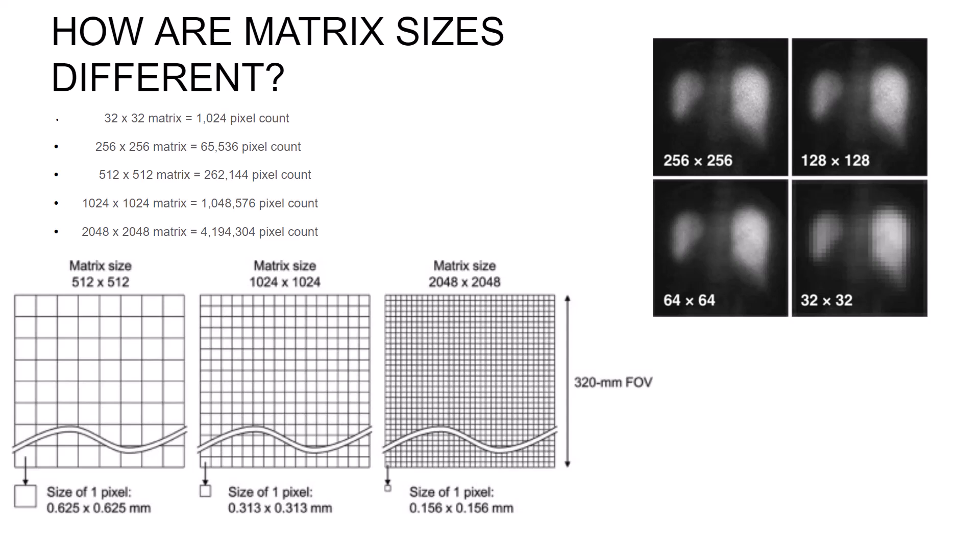And then you have 2048 by 2048, which is found in DR and digital fluoroscopic units with flat panel detectors. The important thing to note is the larger the matrix, the smaller the pixels, and the higher the resolution of the digital image.